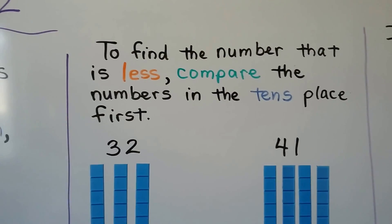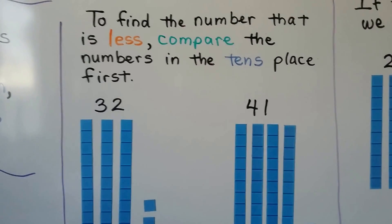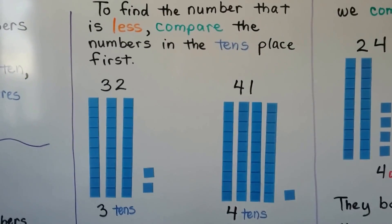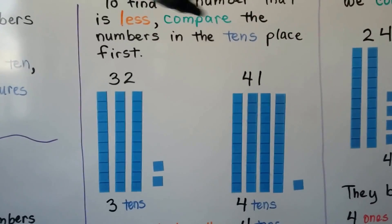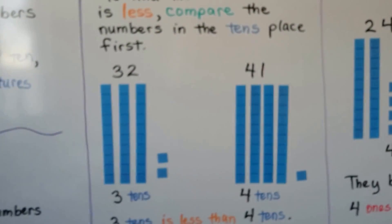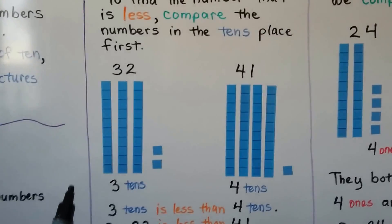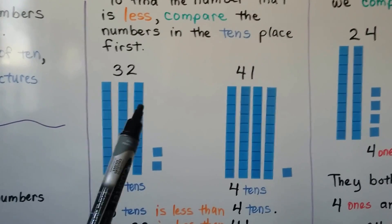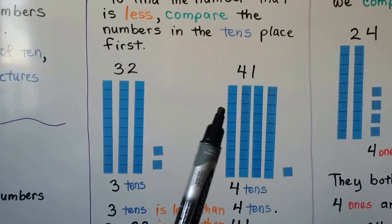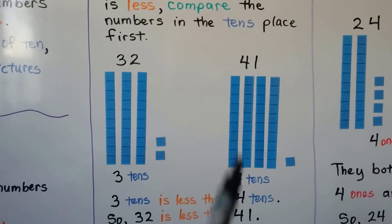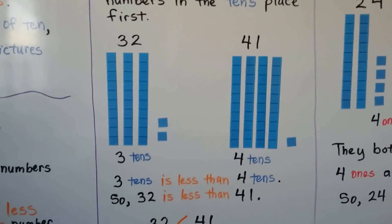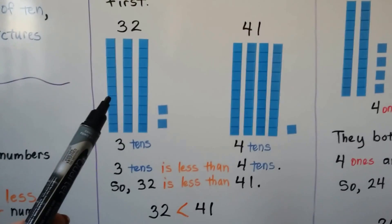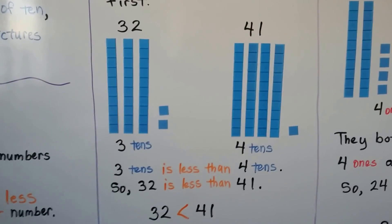To find the number that is less, compare the numbers in the tens place first. We have thirty-two and forty-one. Thirty-two has three tens, forty-one has four tens. Three tens is less than four tens, so thirty-two is less than forty-one.